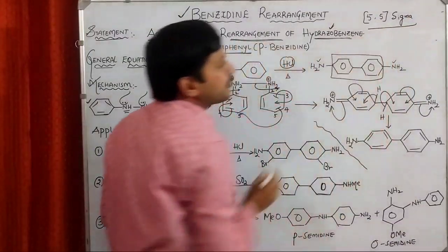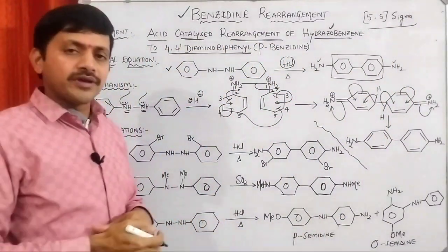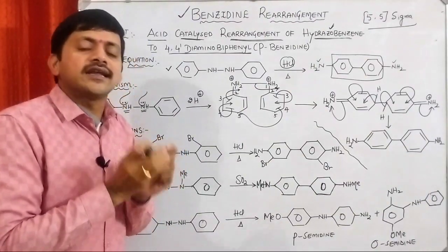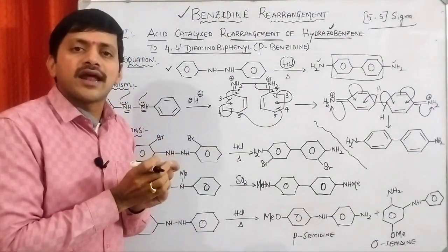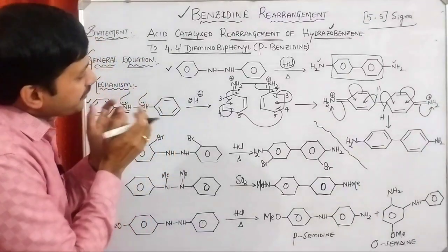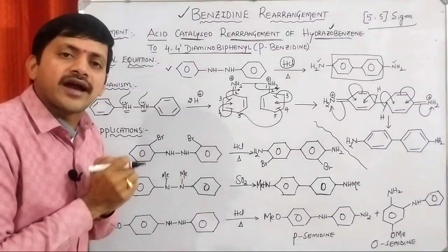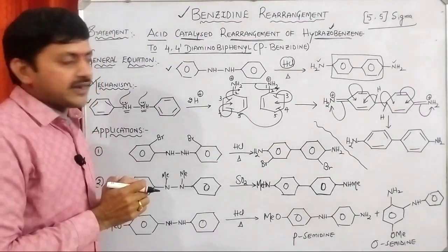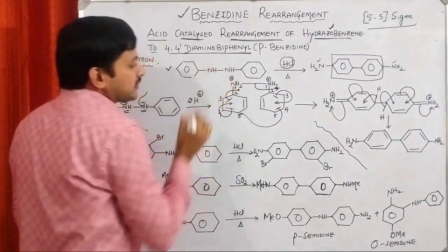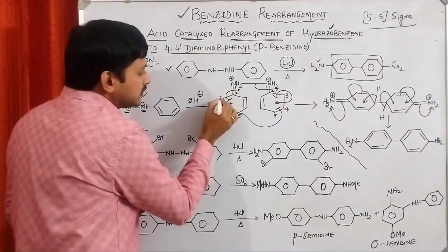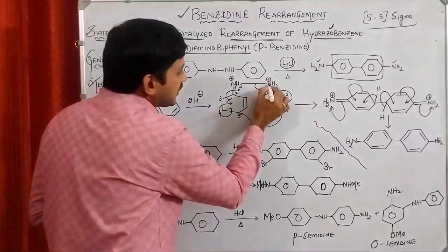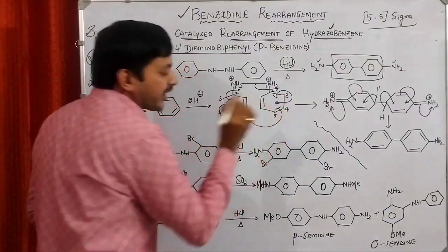It is an example of a [5,5]-sigmatropic rearrangement — meaning we are going to form a connection between two carbon atoms at the fifth positions. Let us see why we call it a [5,5]-sigmatropic rearrangement. With respect to the positive charge, we count: 1, 2, 3, 4, and 5. Similarly on the right side also: 1, 2, 3, 4, 5.